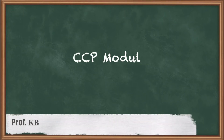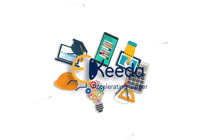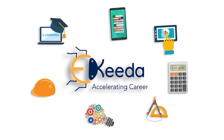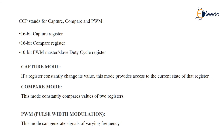Today we'll see the CCP module. CCP stands for Capture, Compare, and PWM. There is a 16-bit capture register, 16-bit compare registers, and 10-bit PWM master-slave duty cycle registers.